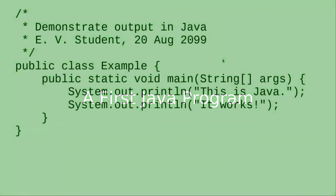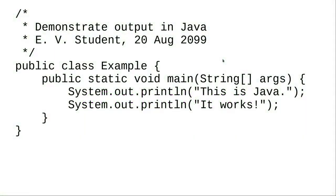Here's a typical first program, which we'll go through in detail. At several points, we'll be telling you to take our word for things rather than go too deep into detail. The lines beginning with slash-star and ending with star-slash are a comment. You use them to let other humans know what your program does. Java ignores your comments — they're for people, not computers.